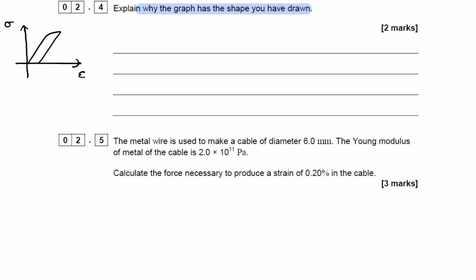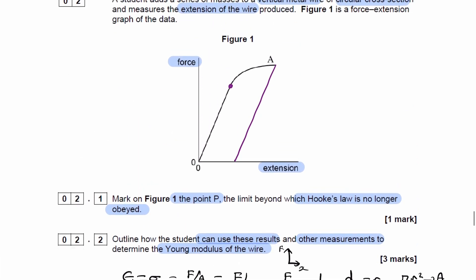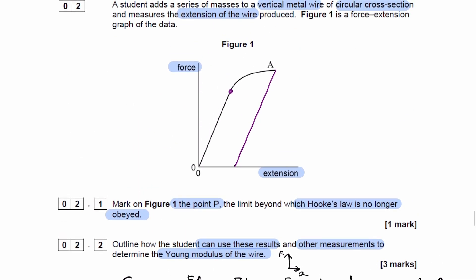But we have a force extension graph, so it's a little bit different. Here the gradient represents stiffness, and that depends on both the material as well as the dimensions of that object. So the only way that the gradient is the same as before is if the thickness of the material hasn't significantly changed. If the wire is significantly thinner, it would be easier to stretch and relax, and therefore the gradient would be lower.